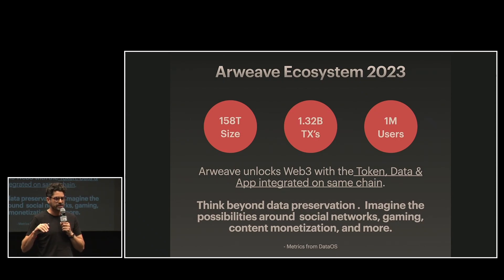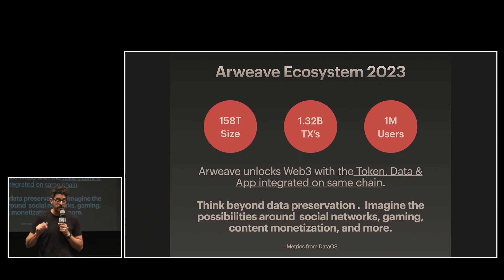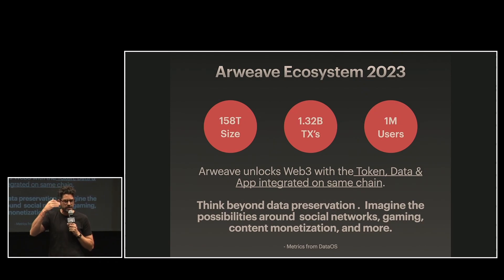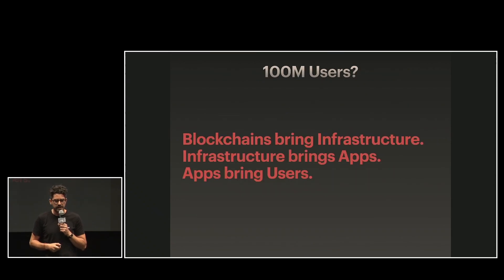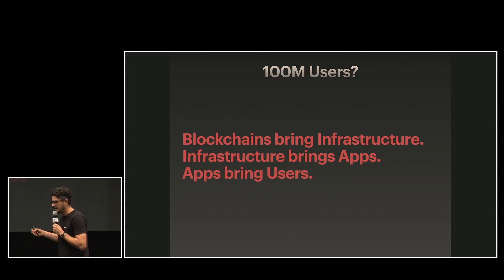One thing I want to highlight is the permaweb — the Arweave ecosystem does something really quite unique. It's combining the token, combining data, and combining your application together on the same chain. That opens up so many new possibilities. Think about social networking, gaming, content monetization. As we've seen earlier today, different protocols and apps are providing that. To summarize: blockchains bring infrastructure, that infrastructure brings apps, and with those apps we can bring the users we're hoping to support.